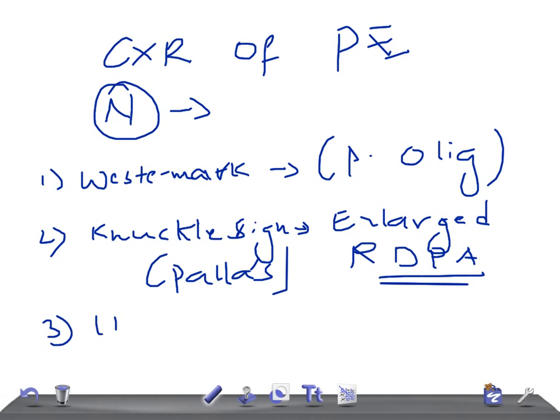Very important: Hampton's hump. Hampton's hump is a peripheral wedge-shaped opacity with convexity towards the hilum.